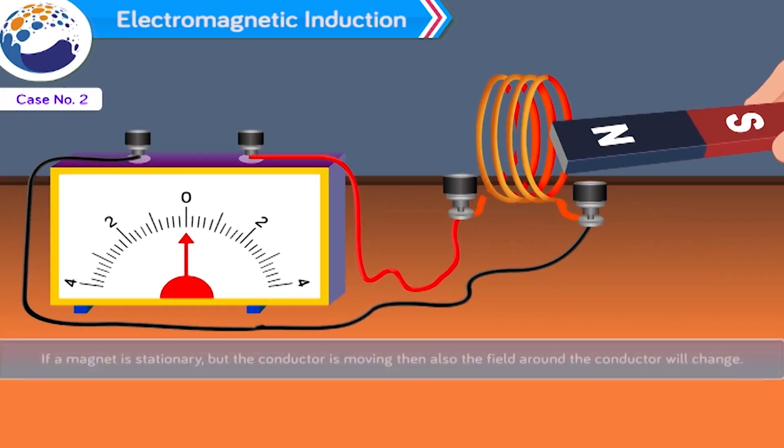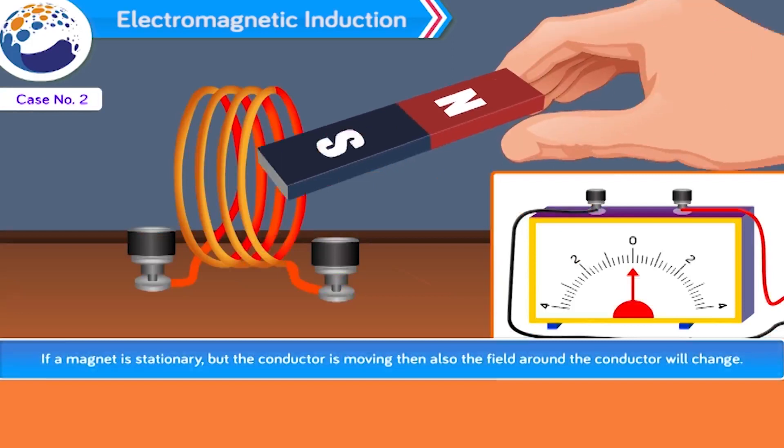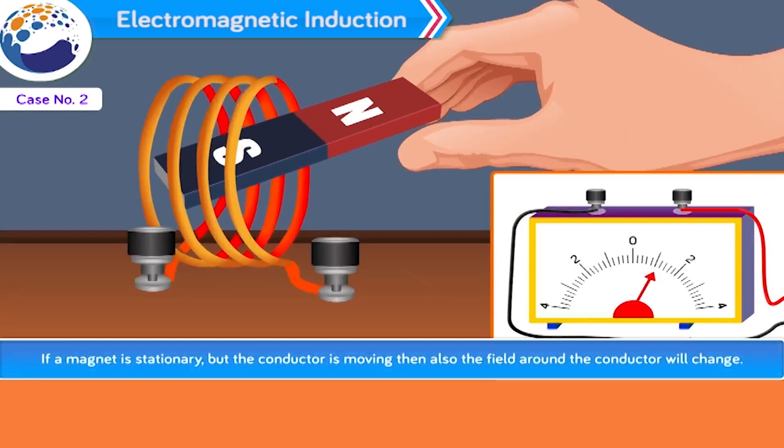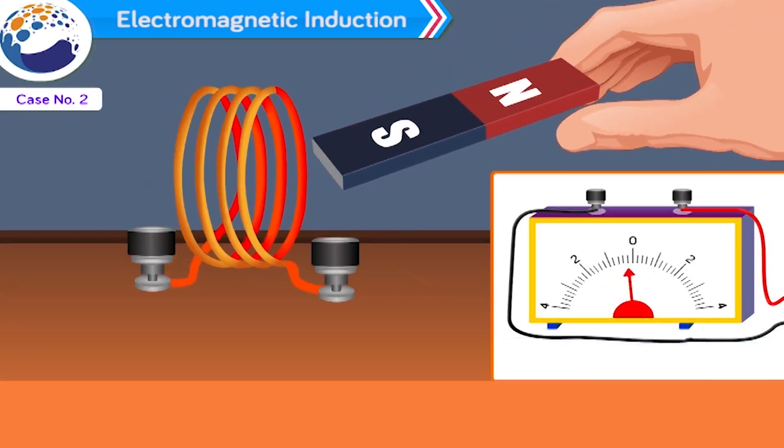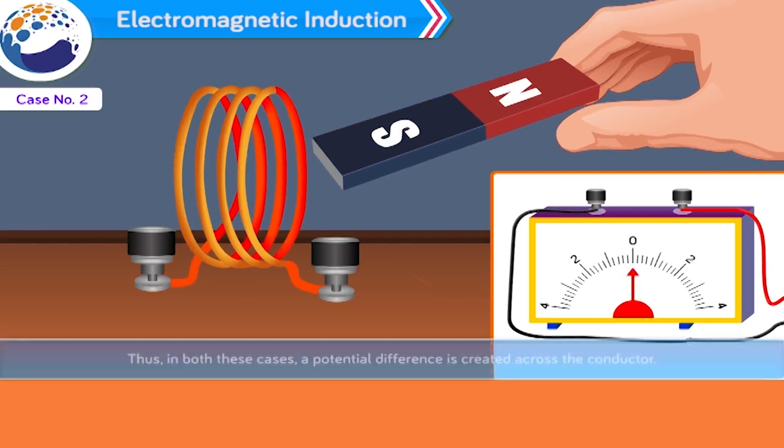Case number two: If a magnet is stationary, but the conductor is moving, then also the field around the conductor will change. Now if you keep the bar magnet at rest and move the coil, the galvanometer again shows deflection. Thus, in both cases, a potential difference is created across the conductor.